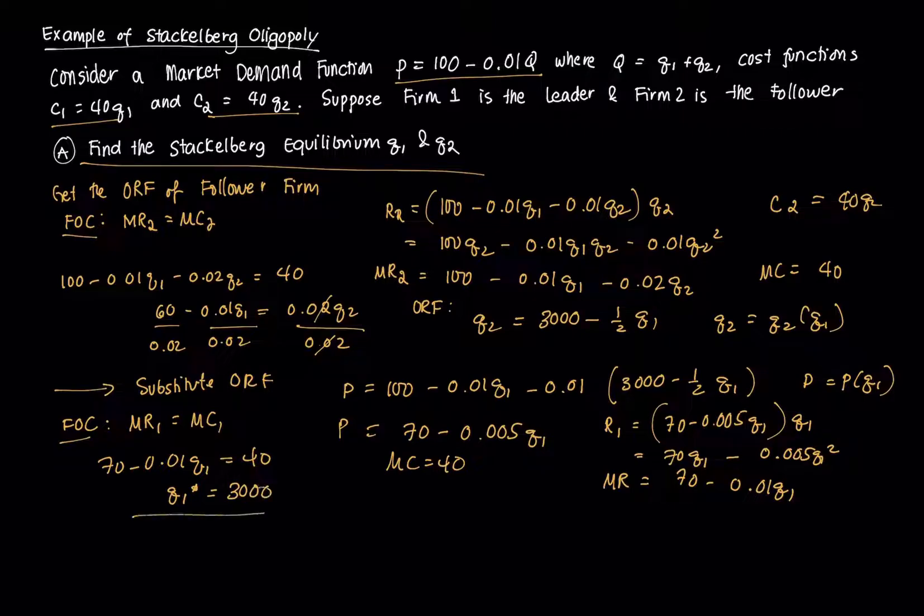If I plug in this 3000 into the output reaction function, so that's Q2 equals 3000 minus one half times 3000, I get Q2 star being equal to 1500. So those are the Stackelberg equilibrium quantities.